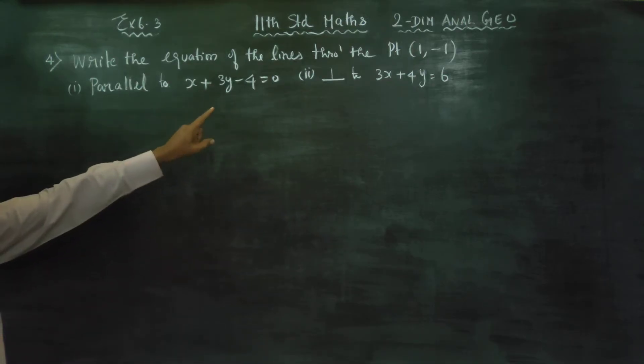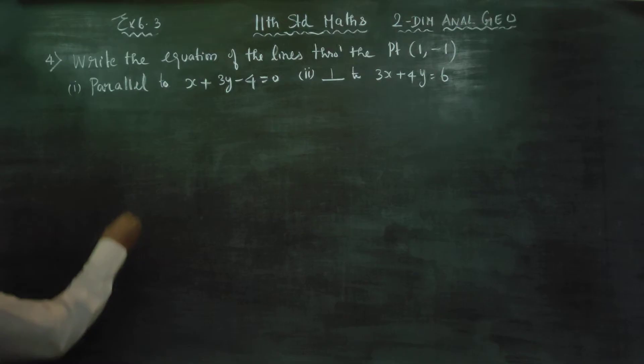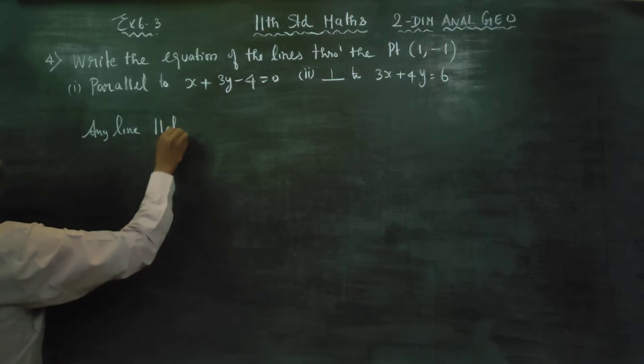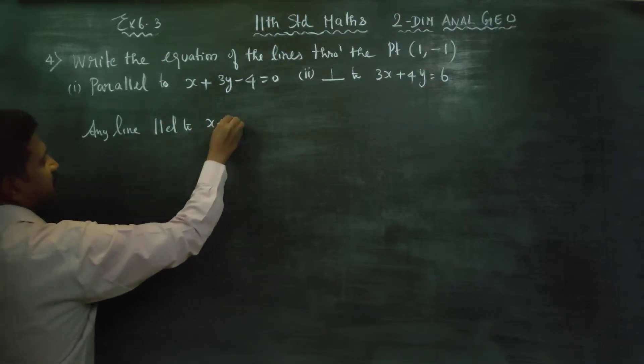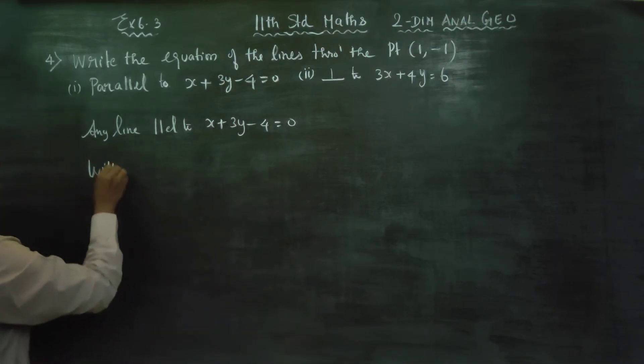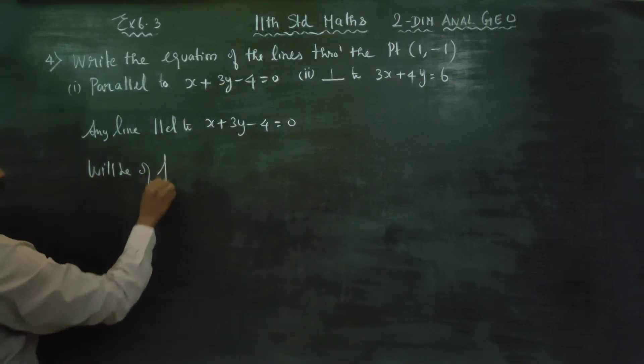This is my parallel line and this is my perpendicular line. Any line parallel to x plus 3y minus 4 equals 0 will be of this form.